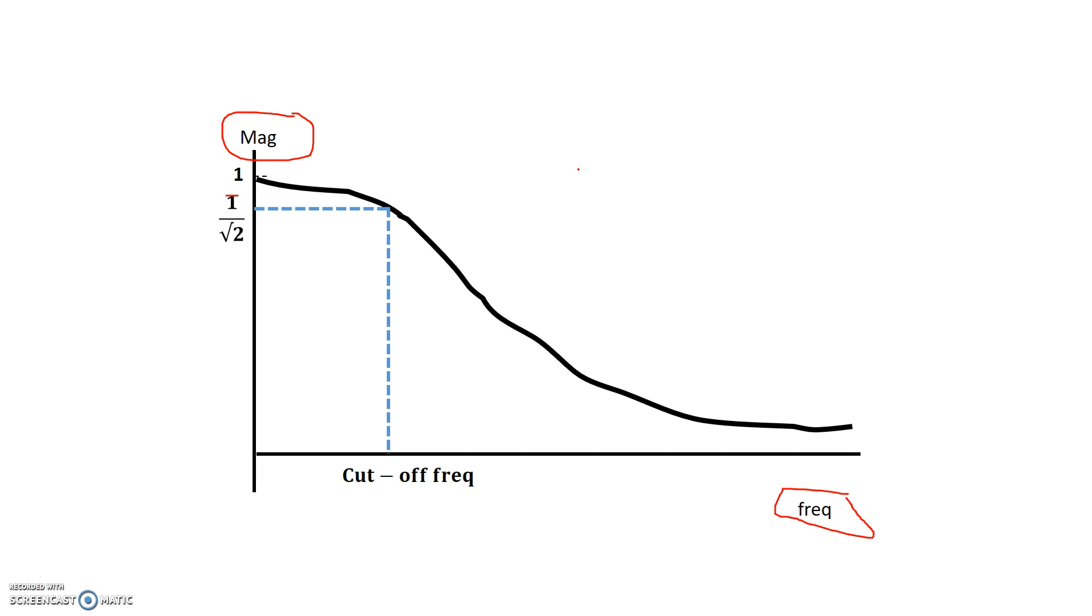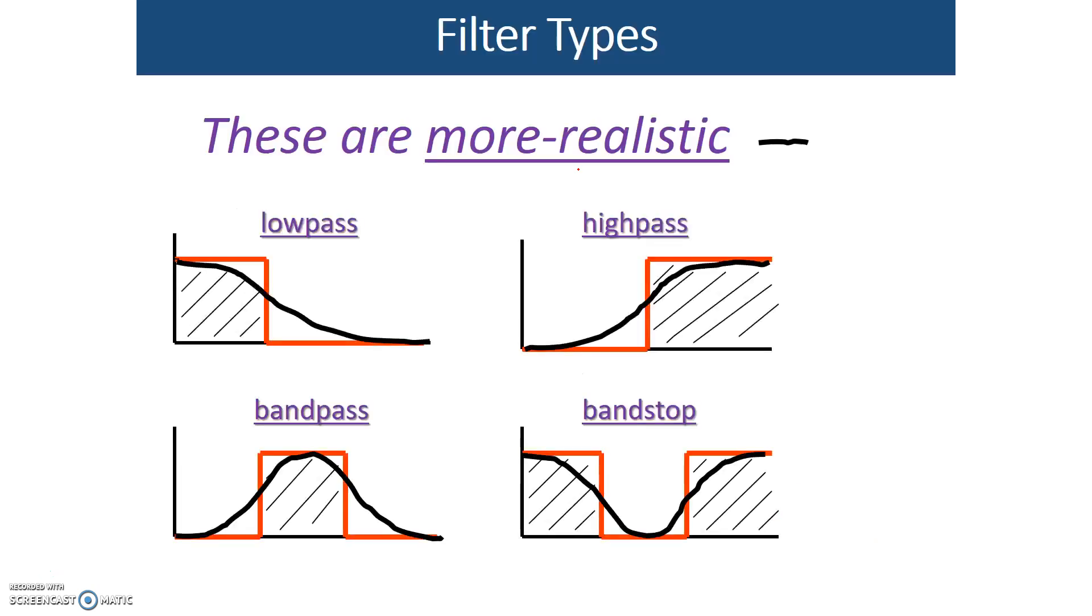So that's where the filter cutoff into what passes and what does not pass basically lies. So in this example right here, this abrupt line right here, that was the cutoff frequency. Whereas in a more realistic filter, that would be at 1 over square root of 2 of the maximum value.